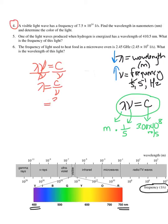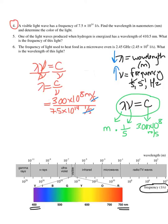So if I look up c, it's 3.00 times 10 to the 8th meters per second. I highly recommend plugging in with units. The frequency given in the problem is 7.5 times 10 to the 14th, one over seconds. When you plug in with units, you will see how they cancel — seconds will cancel with seconds, and I'm going to be left with the unit of meters. So plugging into my calculator, 3 times 10 to the 8th divided by 7.5 times 10 to the 14th, I should get 4.00 times 10 to the negative 7th meters.